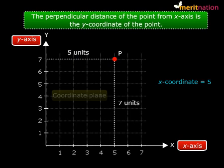And similarly, the perpendicular distance of the point from the x-axis is the y-coordinate of the point. So you can see that point P lies at a distance of seven units from the x-axis. So what is its y-coordinate? Yes, that is seven.